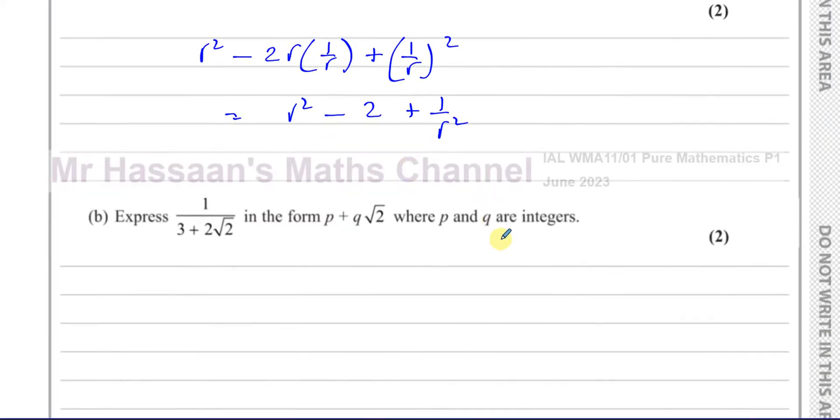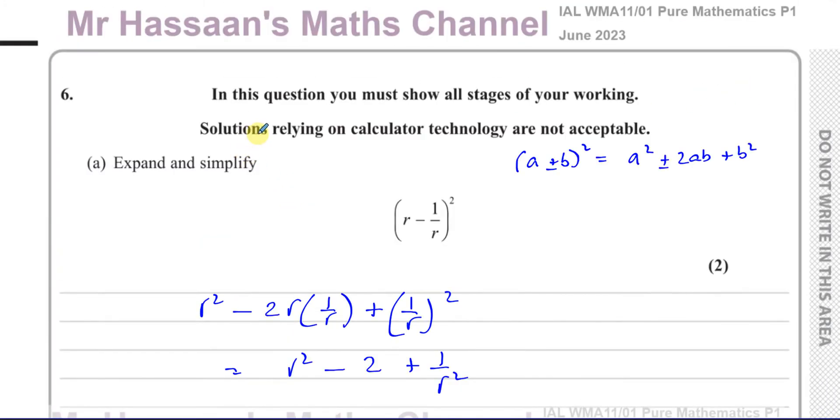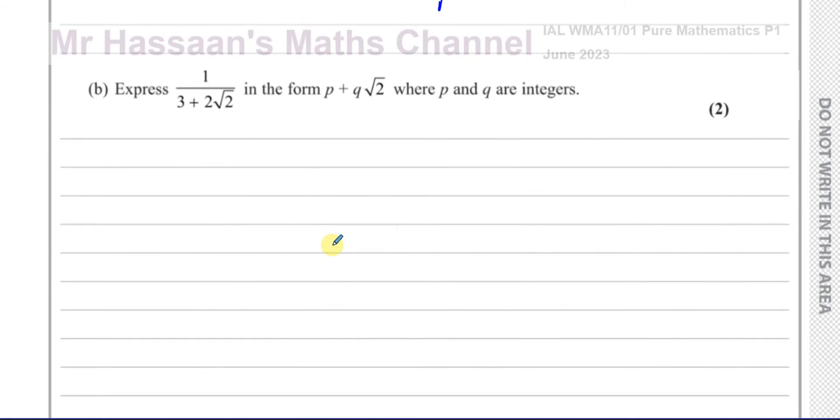Now for 6B, it says express this fraction in the form P plus Q root two. So here we have something in surd form, and the denominator has an irrational number, and we have to rationalize the denominator. The reason it has this statement here, solutions relying on calculator technology are not acceptable, is because we could stick this in our calculator and get the answer out, but you'll lose the two marks if you did that, even if you wrote the right answer down. So you have to show the step, how you rationalize the denominator.